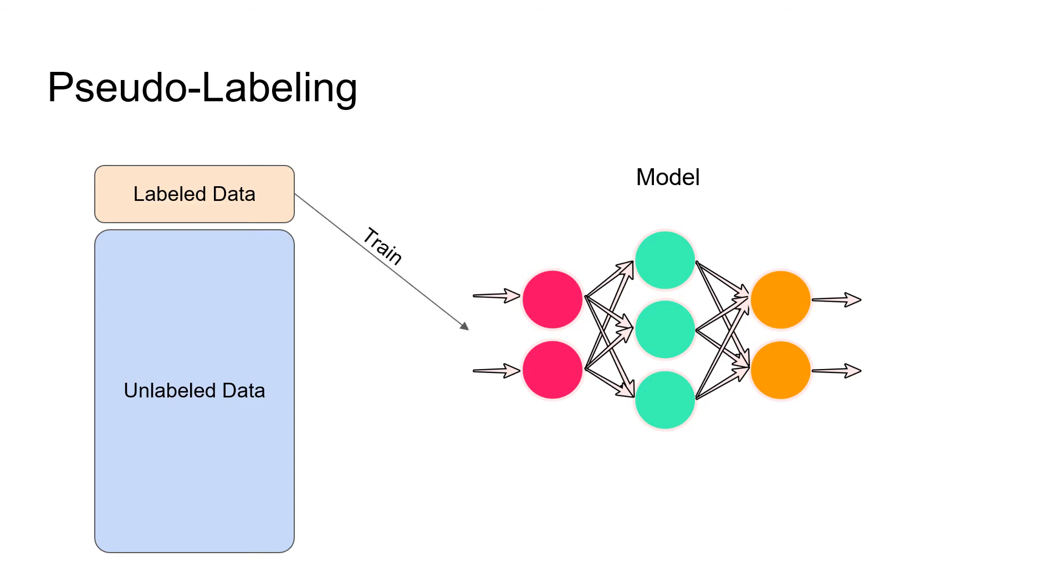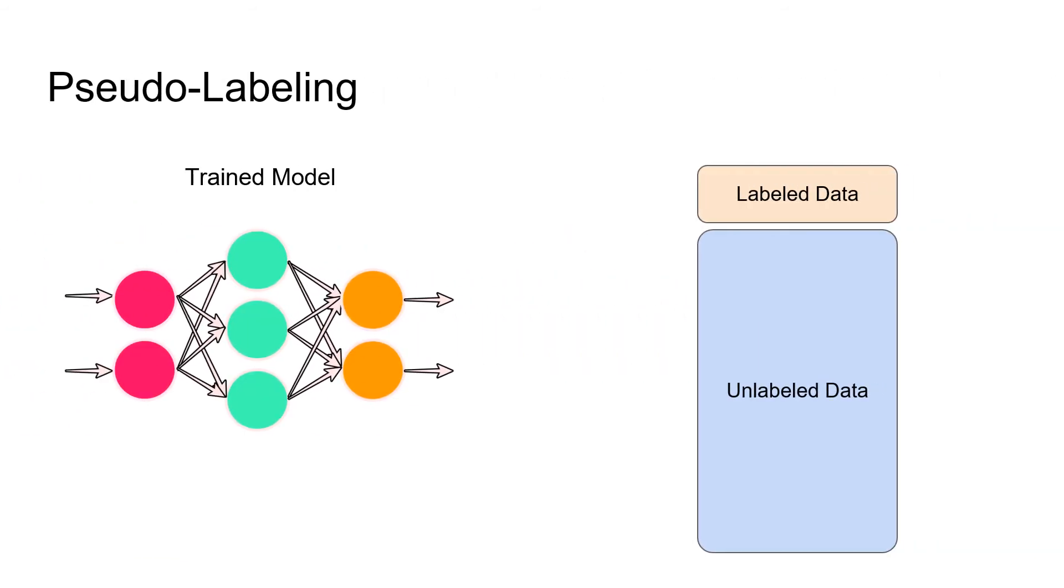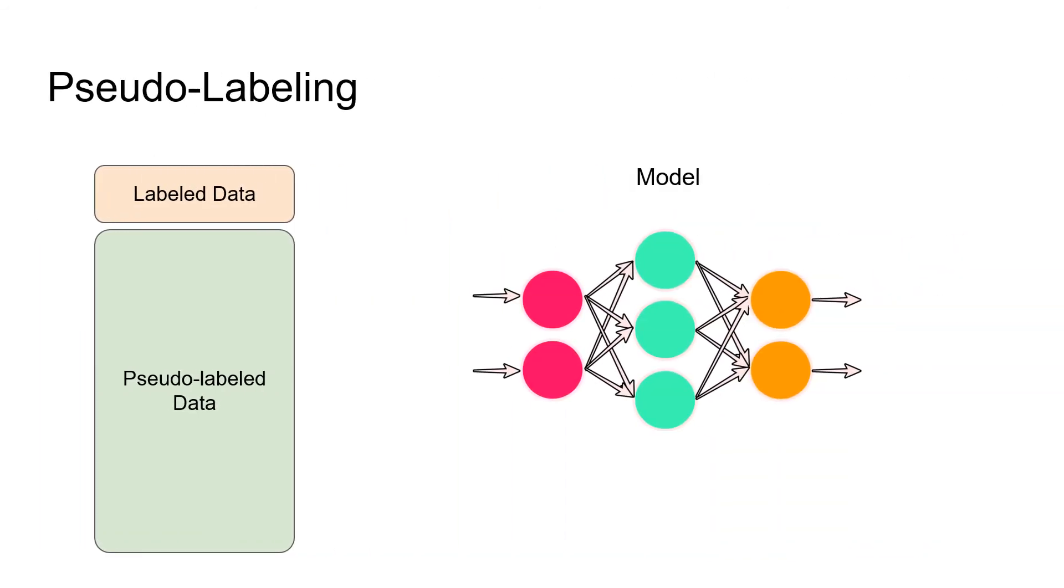Firstly, we train our model on labeled data as usual. Once the training converges, we use the trained model to predict the sort of ground truth labels for unlabeled data, and therefore obtain pseudo-labels. After that, we use both labeled data and pseudo-labeled data to train a new model from scratch. This allows us to train on 95% previously unused data.